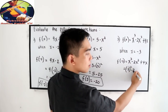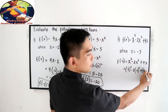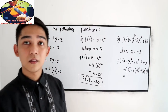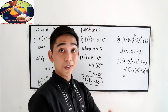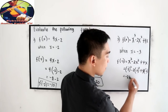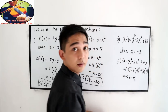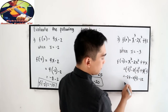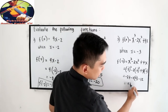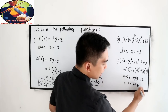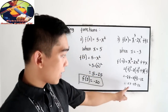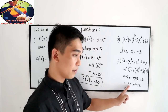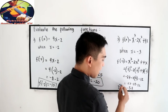Substituting x = negative 3: negative 3 cubed minus 2 times negative 3 squared plus 4 times negative 3. Evaluating: negative 12 plus 18 is 30, and 30 plus 27 is 57 — so the result is negative 57. So that is f of negative 3.